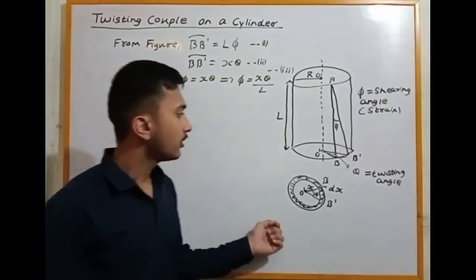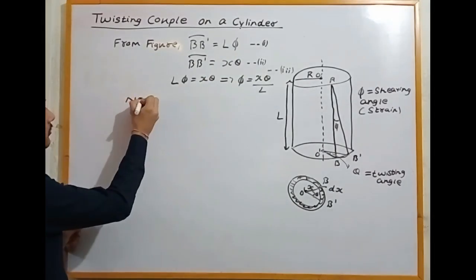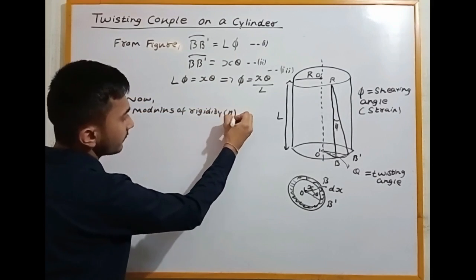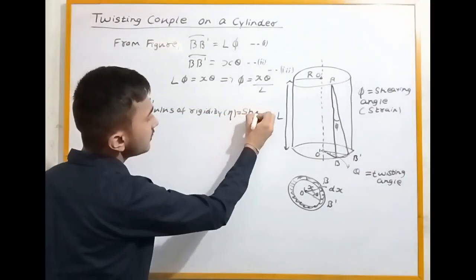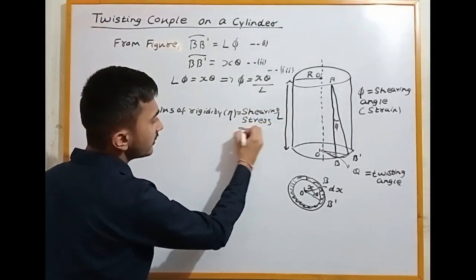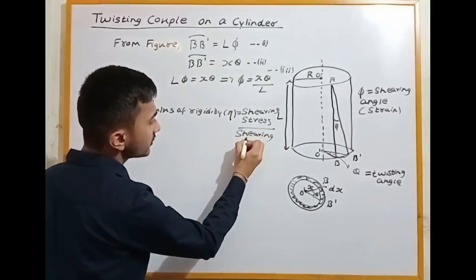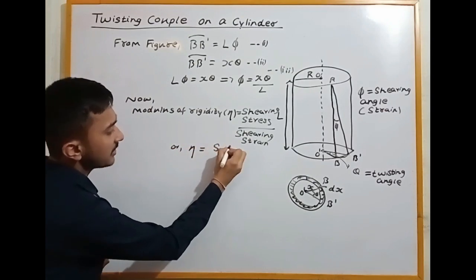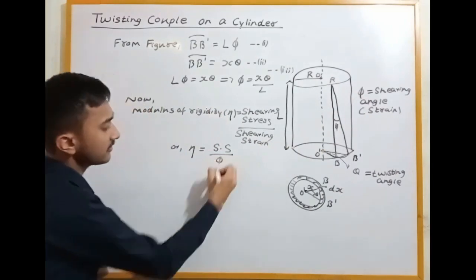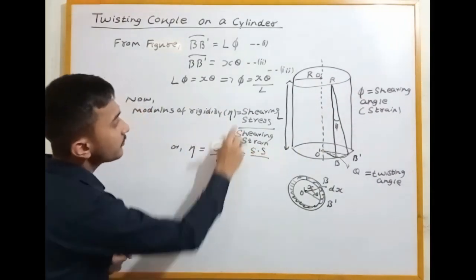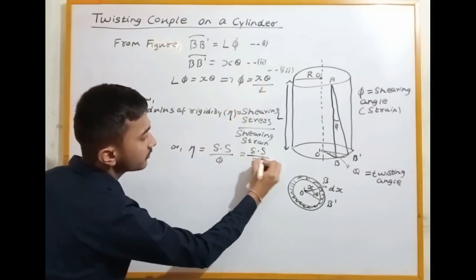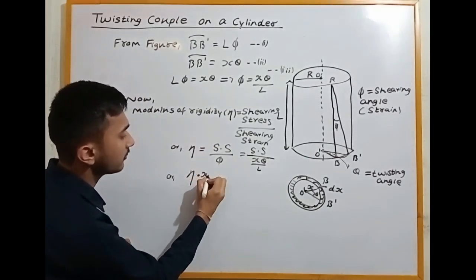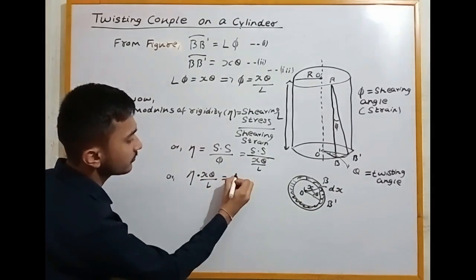This is Equation 3: l times x times theta. Now we have modulus of rigidity. Modulus of rigidity — eta is represented. Modulus of rigidity is sharing stress divided by sharing strain. Eta equals x times theta divided by L. This is the sharing stress.